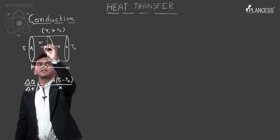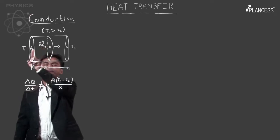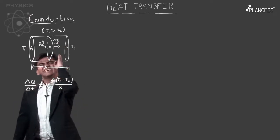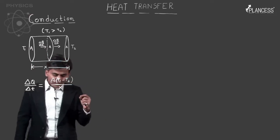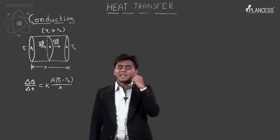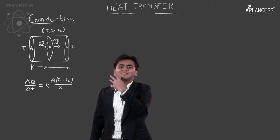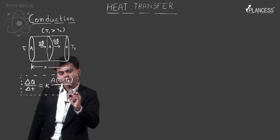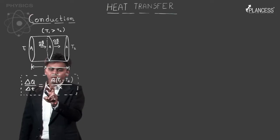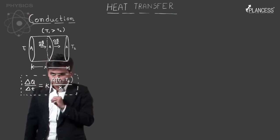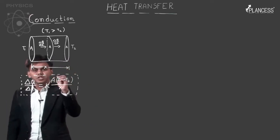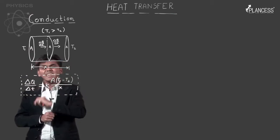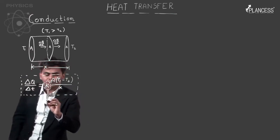This arrow represents ΔQ/Δt in, which equals ΔQ/Δt out, meaning the same amount of heat keeps flowing through any cross-section. The rate of heat flow is equal to K times A times the temperature difference, divided by X. Here, A is the area of cross-section, T1 minus T2 is the temperature difference, X is the separation between the two ends, and K is the thermal conductivity — which is what we are after.